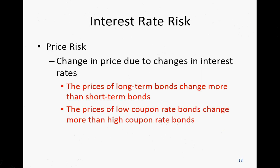The next subject is interest rate risk, which comes from the fluctuation of interest rates. When interest rate goes up, price goes down; when interest goes down, price goes up. Two conclusions to remember: first, prices of long-term bonds change more than short-term bonds; second, prices of low coupon rate bonds change more than high coupon rate bonds. So long-term bonds are more sensitive than short-term, and low coupon bonds are more sensitive than high coupon bonds.